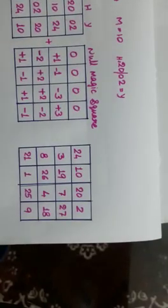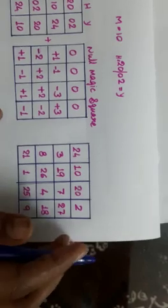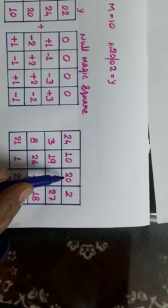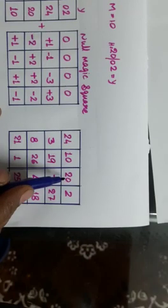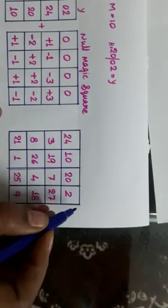When we add these numbers, see here, you will be getting one number only, same number. See, 24 plus 10, 34 plus 20, 54 plus 2, 56.